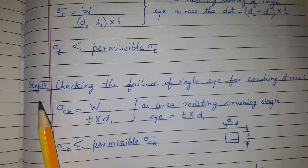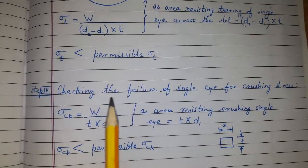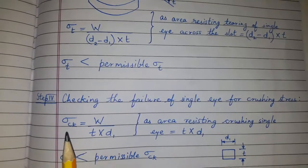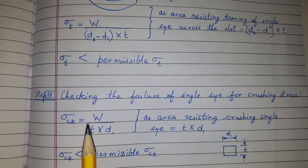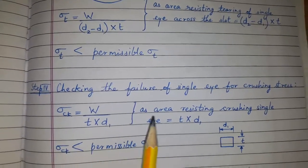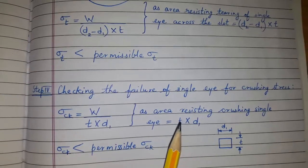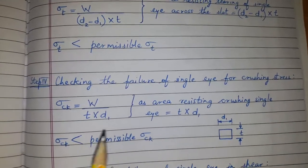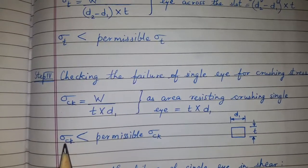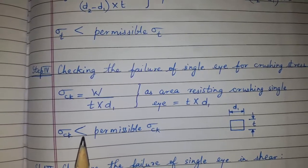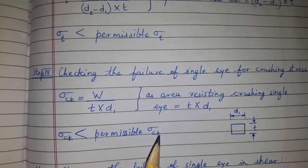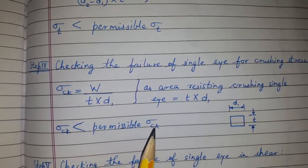Step 4: checking the failure of single eye for crushing stress. Crushing stress is equal to load upon the resisting area, which will be t × d1. Once we get the crushing stress, we have to see whether it is less than the permissible or the given crushing stress.